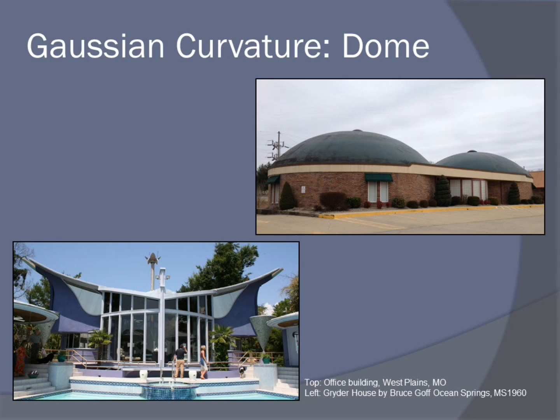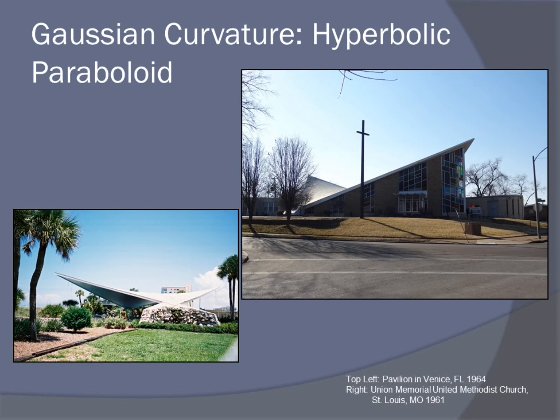The first and easiest type for us to understand is the dome. If we think of a piece of paper as our flat plane, you form the dome by pushing on the flat plane and creating the dome. Here we've got two examples — the concave and convex versions. The one in the top right is a local office building in West Plains, Missouri, and the other is the Grider House in Ocean Springs, Mississippi.